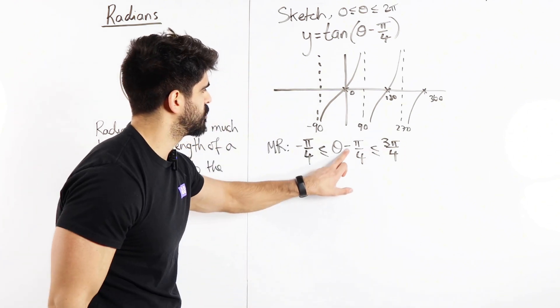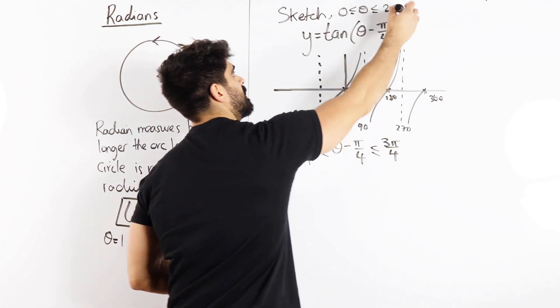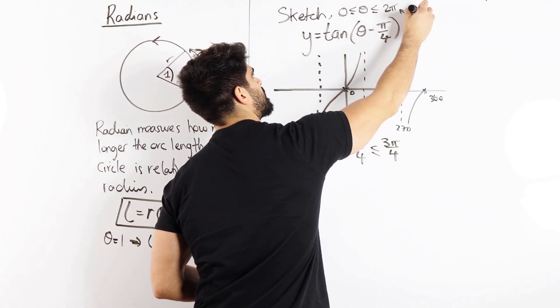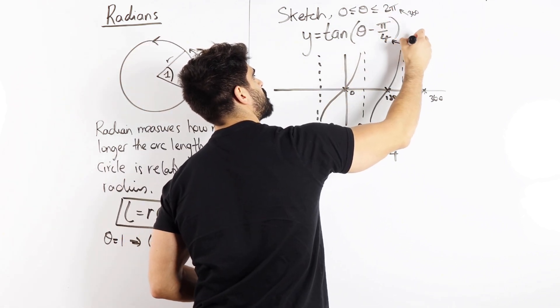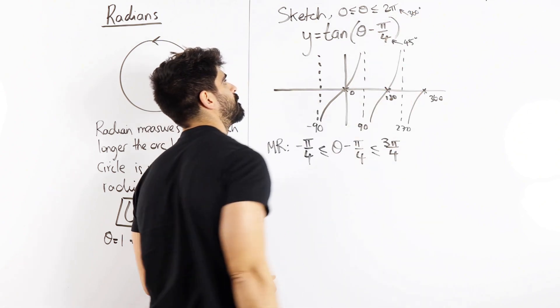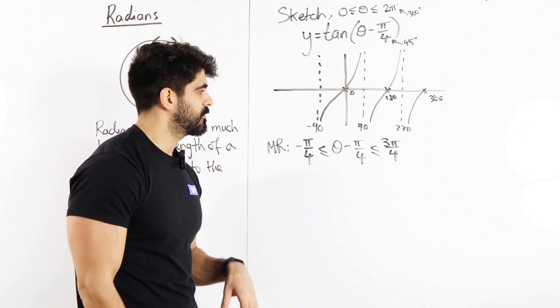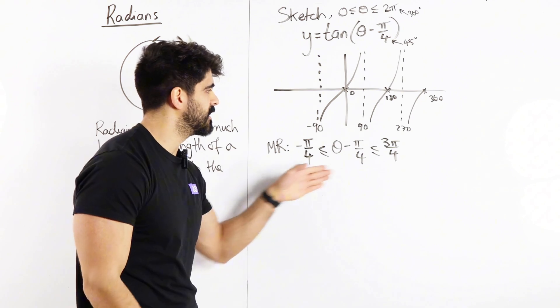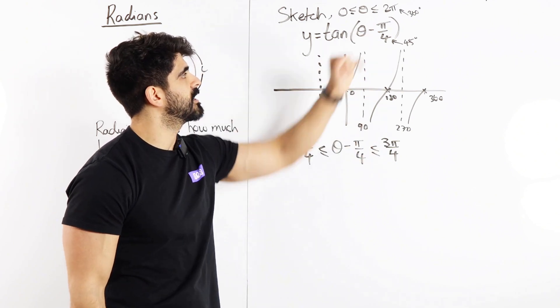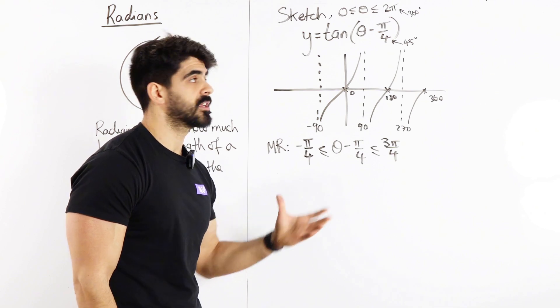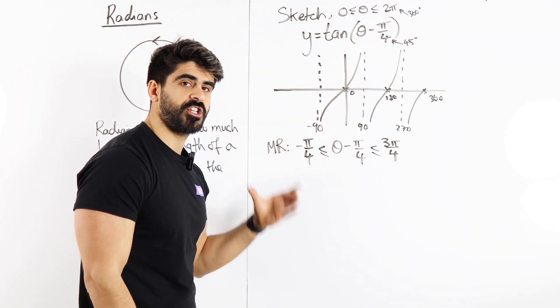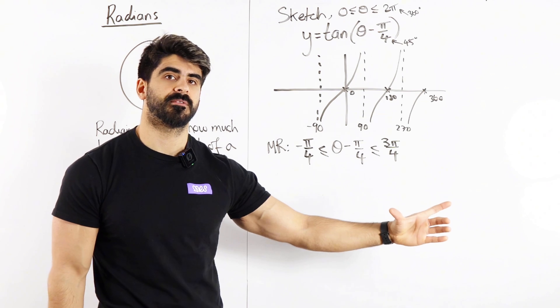Now when you start off, you can just think of this as saying, I know this is 360 and I know this is 45 degrees. So I need to sketch the tan graph, just the ordinary tan graph within this range, because theta minus pi over 4, think about your functions, theta minus pi over 4 actually shifts the tan graph to the right by pi over 4.